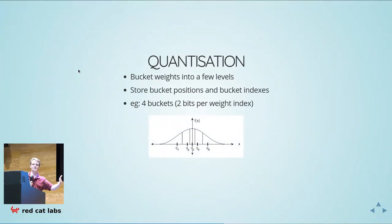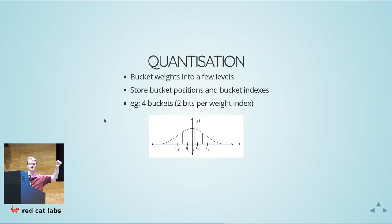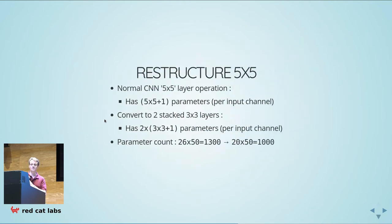Another simple technique is quantizing the weights to just a few levels. If weights are distributed from very small to very large, you just pick four separate levels — maybe five including zero — and instead of using the actual weight, use the quantized weight. You fiddle around with the levels to best represent your data. To store those weights, if you have four buckets you only need a two-bit index into the quantization levels, then store the quantization levels at 8-bit or 16-bit resolution. This compresses well.